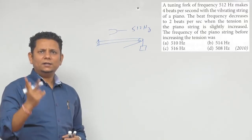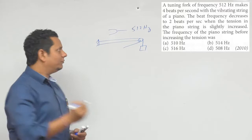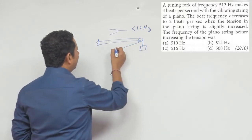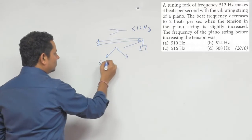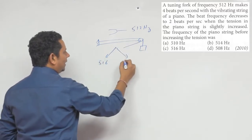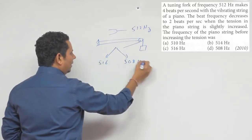In this case we have 4 beats per second. This means the sonometer wire is 516 Hz, which is plus 4, or 508 Hz frequency, which is minus 4.